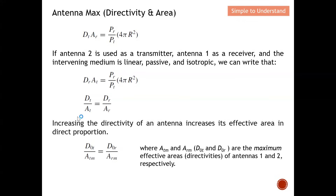From D_t · A_r = D_r · A_t, we can see that increasing the directivity of the antenna also increases the effective area. Making these values maximum — letting A_tm, A_rm be the maximum effective areas and D₀t, D₀r the maximum directivities — we get D₀t · A_rm = D₀r · A_tm.